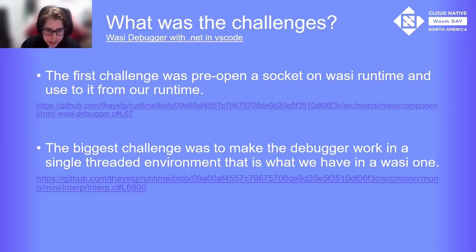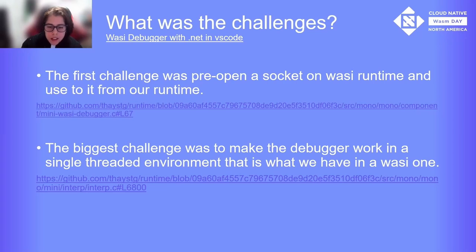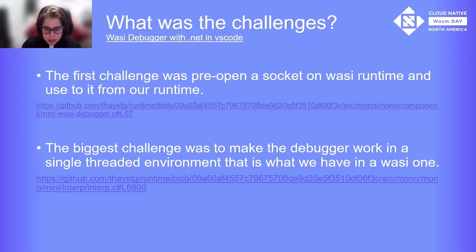The first challenge was to pre-open a socket in the WASI environment and use it in our runtime. It was a little bit difficult to understand how to make it work, but we could make it, and here is the link. The second challenge is that our debugger uses an exclusive thread for communication, and there isn't support for multi-thread in the WASI environment, so we had to communicate with the debugger on the same thread of execution. Whenever we find a sequence point, we check if there is something in the communication buffer, like setting a breakpoint, and execute it. Also, when it stops at a breakpoint, we keep it in a communication loop receiving and sending messages about call stack, locals, and watches, until we receive a step or a resume, and then it continues execution.